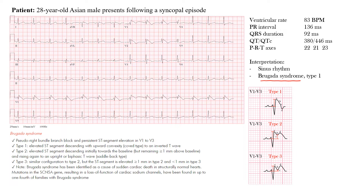The Brugada pattern is essentially a pseudo right bundle branch block with persistence of ST elevation in V1 through V3. We'll specifically be focusing on those leads, and the main pattern is that pseudo RBBB appearance with ST elevation in V1 through V3. Type 1 is the most common pattern.